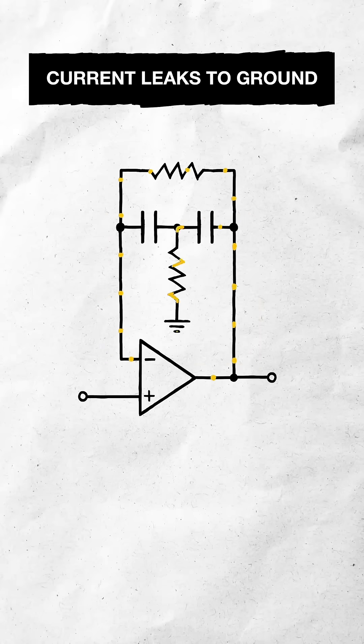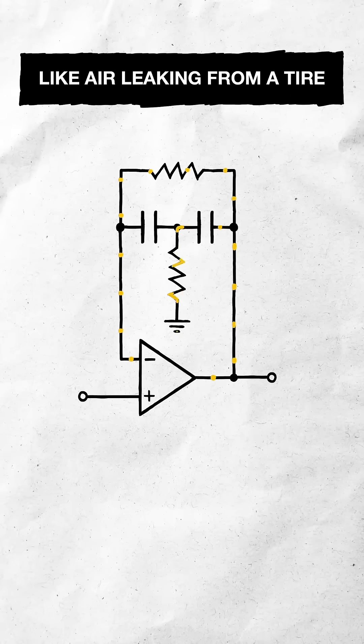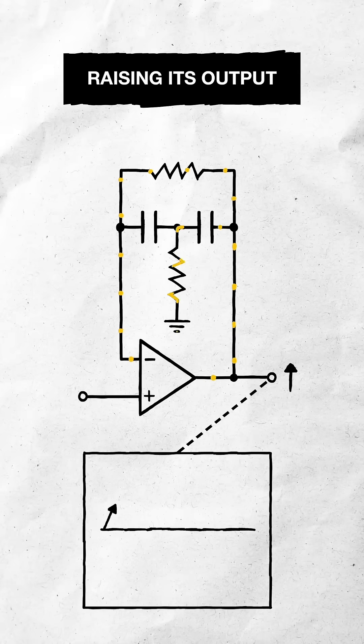But at the same time, current leaks to ground through the center resistor, like air leaking from a tire, forcing the opamp to keep raising its output.